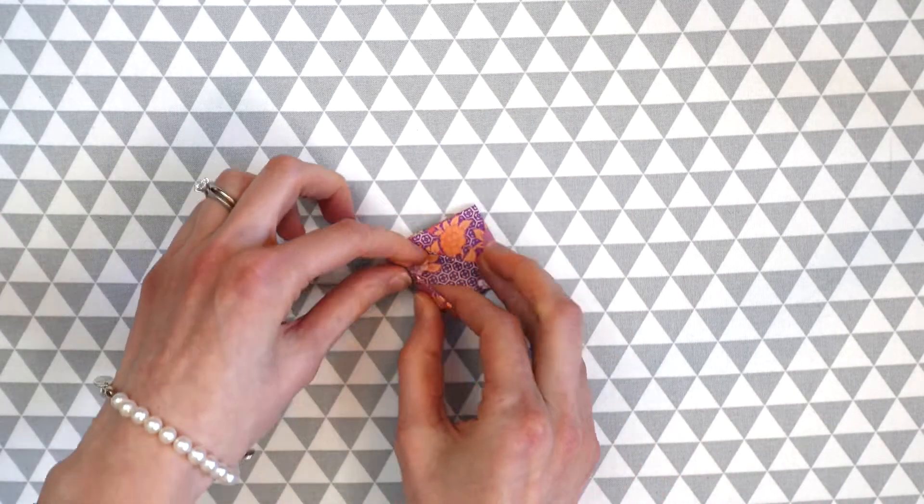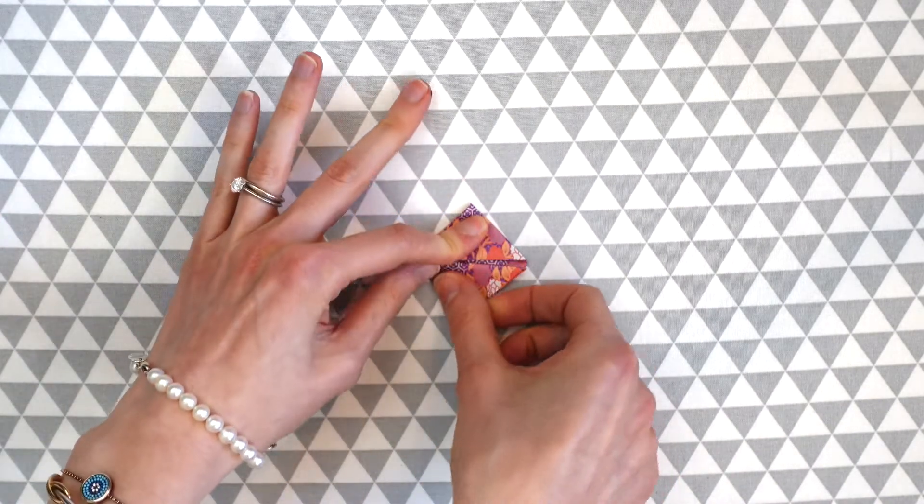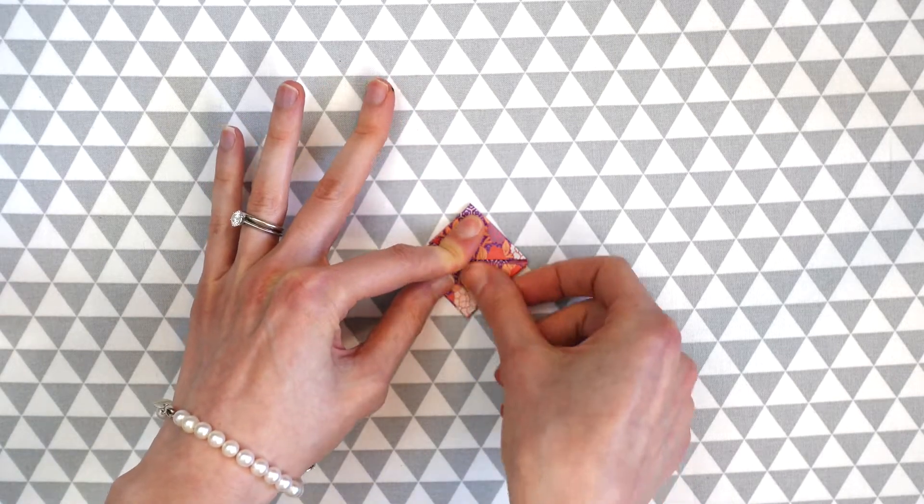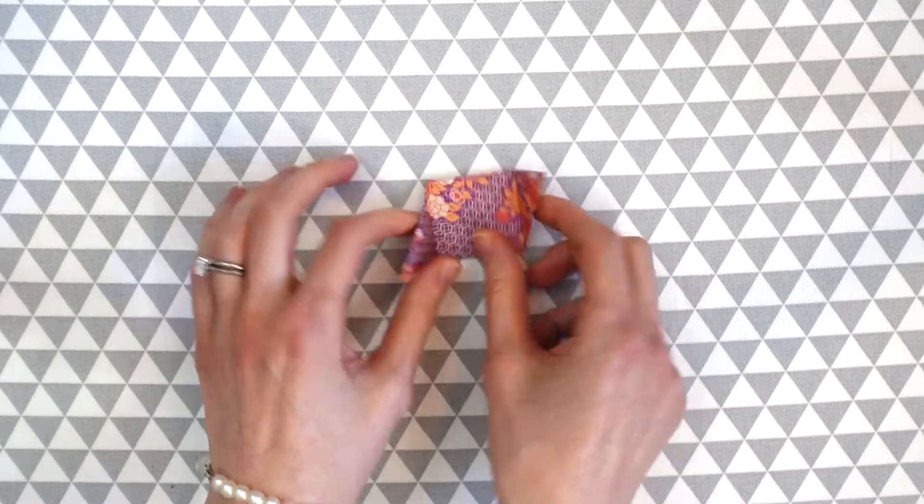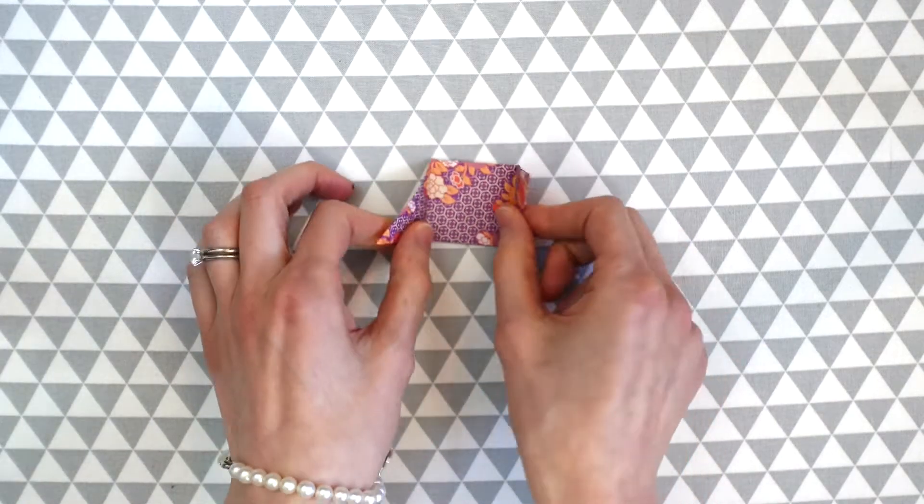We're going to do the same thing with this left side here and bring it across so we have this shape. Now we're going to unfold what we just folded, just these two pieces, and that's our shape. So we're going to be making five more of these.